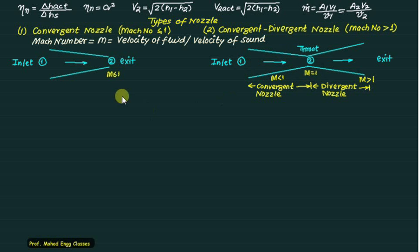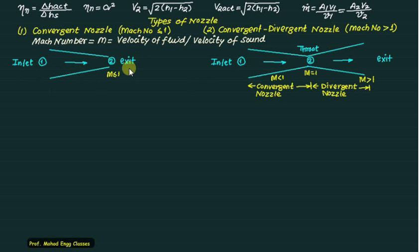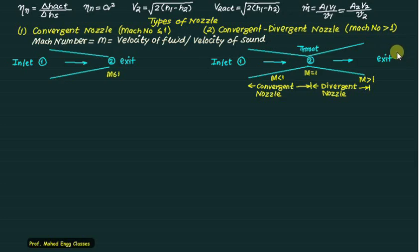In the convergent-divergent nozzle, the convergent portion operates at Mach number less than one, the throat achieves Mach number equals one, and the divergent portion operates at Mach number greater than one. The convergent nozzle is limited to Mach one, whereas the convergent-divergent nozzle has no upper Mach number limit provided the throat condition is maintained. Higher Mach numbers increase velocity, mass flow, and kinetic energy, thereby increasing power output, so convergent-divergent nozzles are generally better suited.